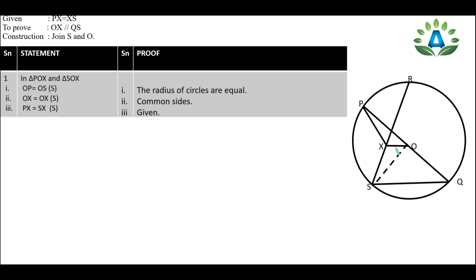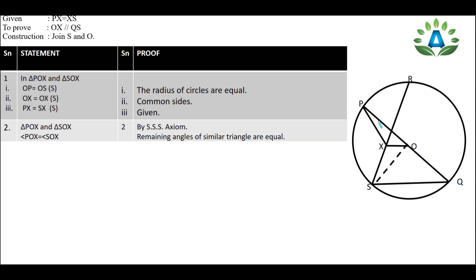In statement number one, we need to prove triangles POX and SOX are similar. Looking at the two triangles: from the center O, we can see two radii — OP and OS — and since radii are always equal, we write OP equals OS. Also, OX is common to both triangles, so OX equals OX (common side). And from the given, PX equals XS. Therefore, by Side-Side-Side (SSS), triangles POX and SOX are similar.